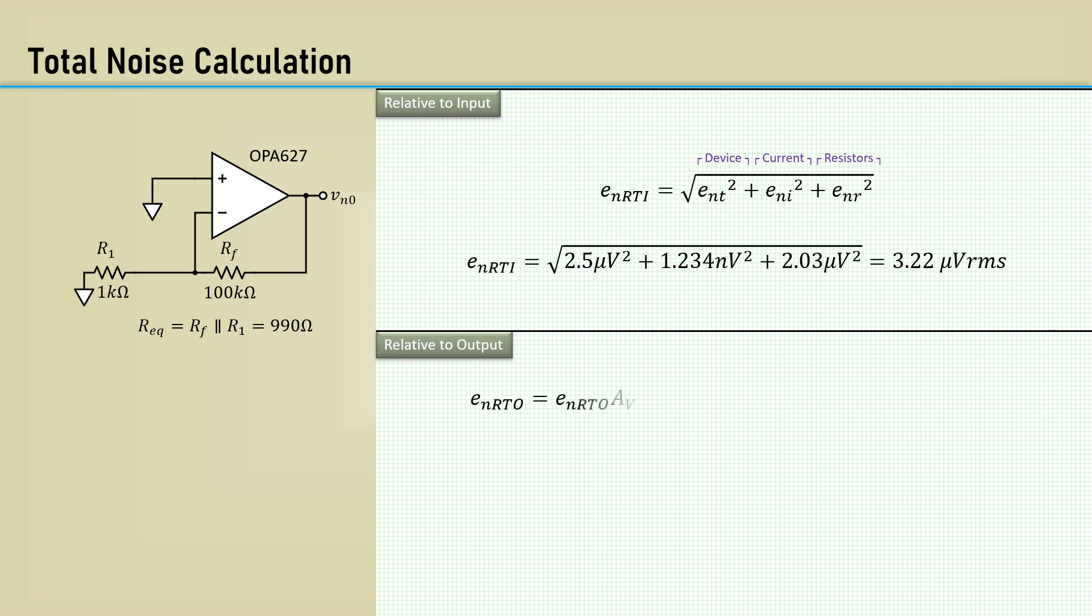To get the output noise, simply multiply by the gain of 101, which yields 325.2 microvolts.